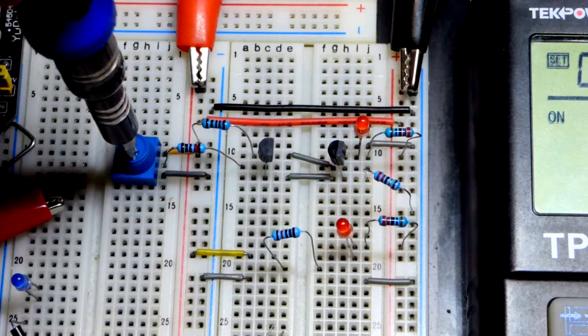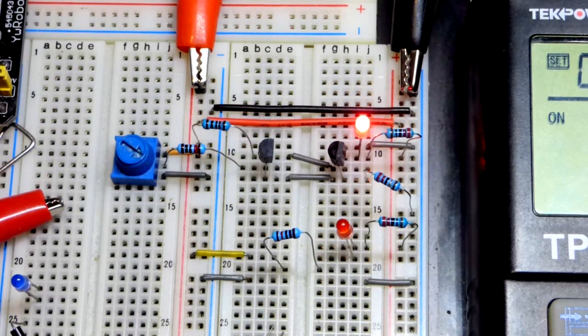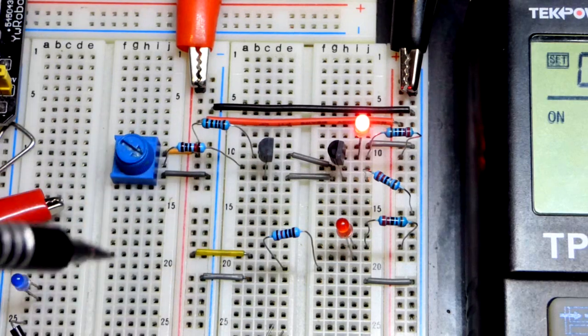But the main thing is it doesn't slowly light up. It turns on completely. So that makes it a Schmitt trigger right there. The sudden on and off and the hysteresis.